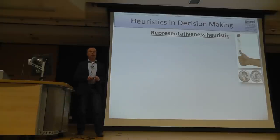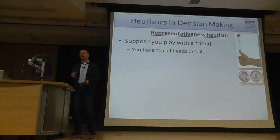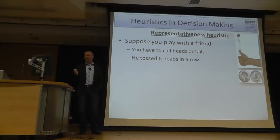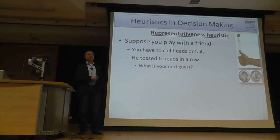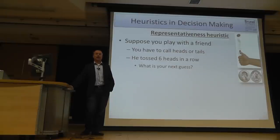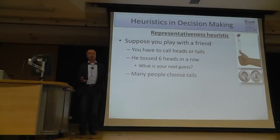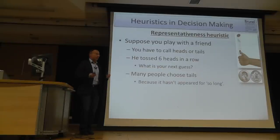Another example is called the representative heuristic. Suppose you play with a friend and toss coins, and he did six heads in a row. What's your next guess — heads or tails? Most people call tails, and that's what many people do. The reason is: because tails hasn't appeared for so long, it must appear now. Can't be seven, eight, nine heads in a row.